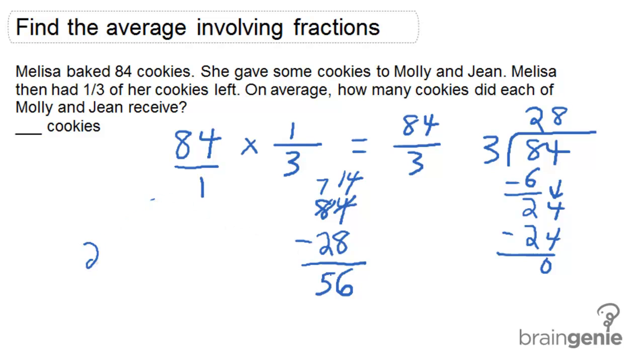If we divide 56 by 2, we're going to be able to figure out what was the average number of cookies that Molly and Jean had, because there were two of them. And as you can see, 56 divided by 2 is 28. So on average, Molly and Jean had 28 cookies.